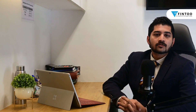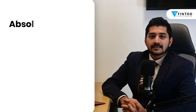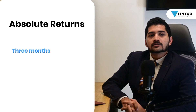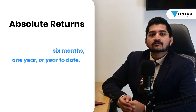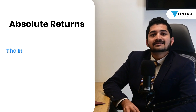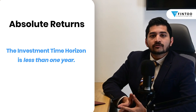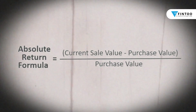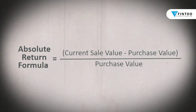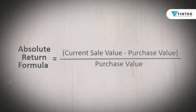Lastly, let's talk about absolute returns with an example. Let's say you want to calculate fund returns for the past three months, six months, one year, or year to date. In this case, the investment horizon is less than one year, so absolute return is more suitable. It is simply calculated as: final value minus initial value, divided by initial value.